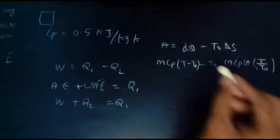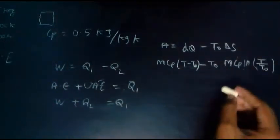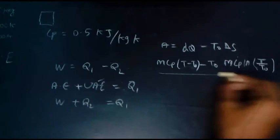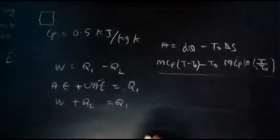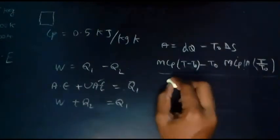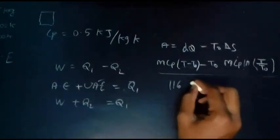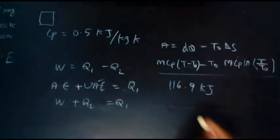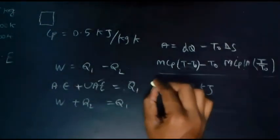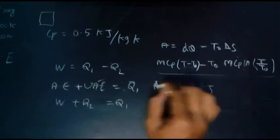So if you substitute all this value in this equation, I will be getting the answer. The answer will be 116.9 kJ. The available energy you will be getting as this.